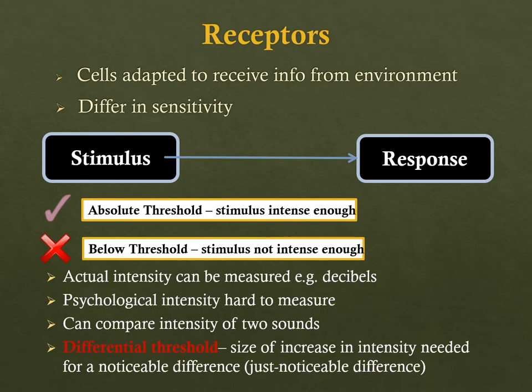Certain cells that are specially adapted to receive information from the environment are called receptors. For example, taste buds on the tongue are receptors, and so are the hair cells in the nose. Receptors differ in their sensitivity — a stimulus needs to have a certain amount of intensity in order to lead to a sensory experience.